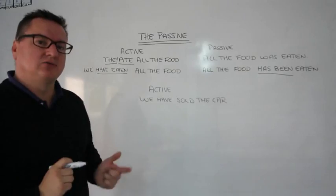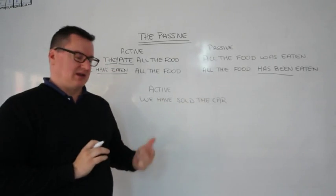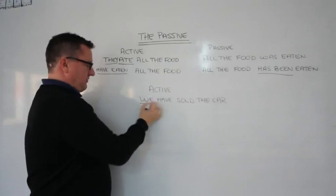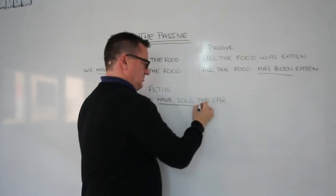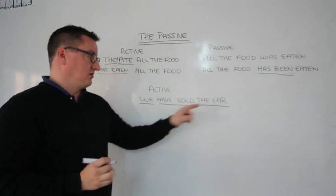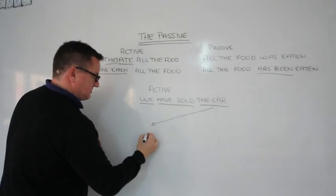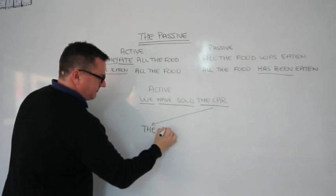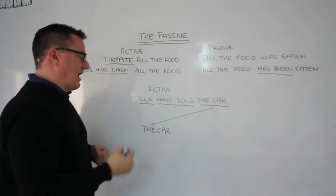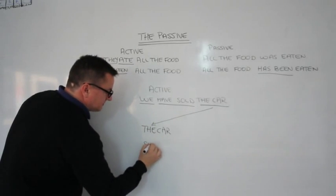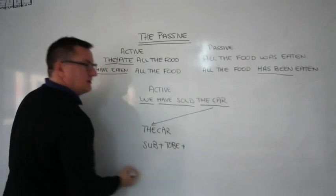So I'm going to show you how to do an example. 'We have sold the car.' First you've got to think of the person — 'we.' 'Have sold' is the verb. 'The car' is the object. The object has to come down, and the object then becomes the subject. The car. Now you always need to add a verb 'to be' when you are making the passive. You make the passive with a subject, plus the verb 'to be', plus the past participle.